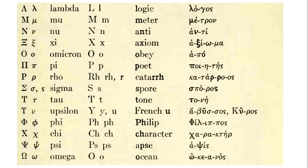Next we have gamma, which we can remember through the word 'ganglion.' Then we have delta, which we can remember through the English word 'decalogue,' which is itself taken from the Greek word 'deka.' Then we have epsilon, and the word we use to remember this is 'epic.' Then we have zeta, and the word we have to remember is 'ads.'